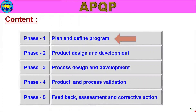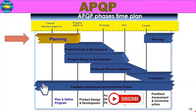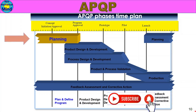Part 3 is the content. Let's look at the details. This is APQP Phases Time Plan. In the Time Plan, we will go to First Planning Phase. That is First Phase: Plan and Define Program. We will go into detail.